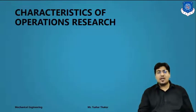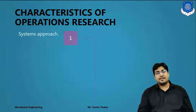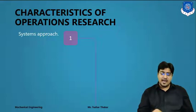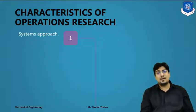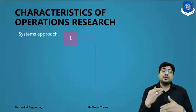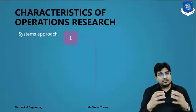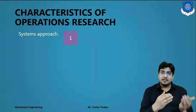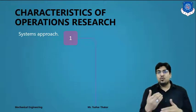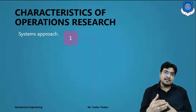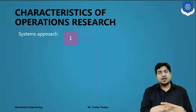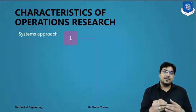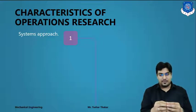What are the characteristics of Operation Research? First, we find a systems approach. It has a systematic way to solve problems. They have some variables, some constraints, and by putting values in a logical sequence, we find the output or optimum value of that problem. This is the systematic approach.